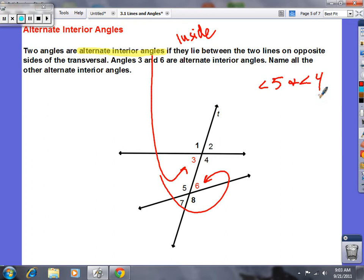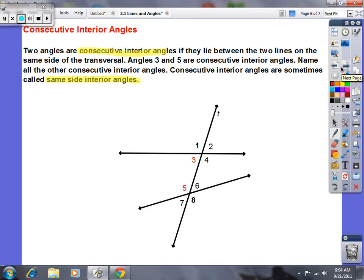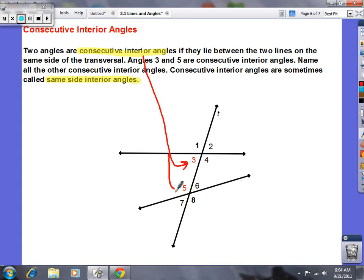Okay, the very last one are called consecutive interior angles if they lie between the two lines on the same side of the transversal. So angles three and five are an example, and what else would be an example? Angle four and angle six. So if they're on the same side, then they're called consecutive interior angles.